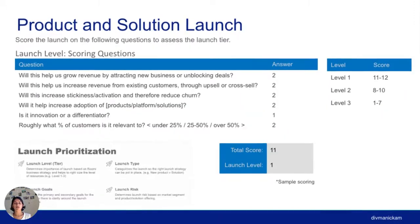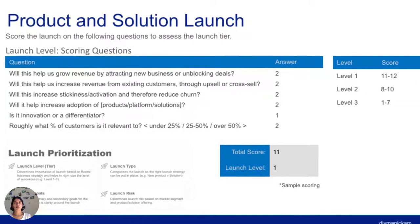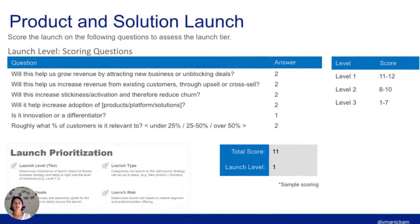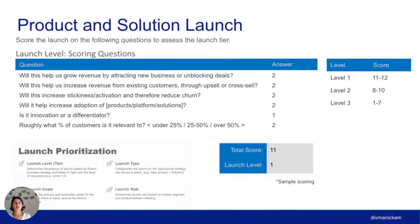Let's talk about how to define product launches. Here's an example from my career that I find very beneficial, especially as you're thinking about different launch tiers and how to bring those tiers together. These scoring questions help evaluate what kind of launch it is — level one, level two, or level three. As part of launch prioritization, you look at the launch level, launch type, launch risk, and additional information.